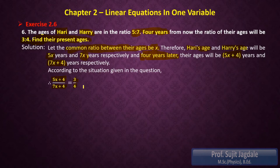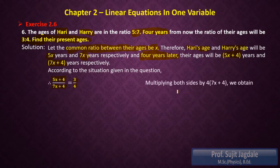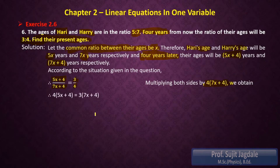Now you can simplify this equation by performing two types of operations: the first is to multiply both sides by the denominator, or the second is to transpose the denominators to the other sides. Both methods are acceptable. Here I am using the method of multiplying both sides by the denominators — that is, 4 into (7x + 4) — combining the LHS and RHS denominators and multiplying both sides by that factor. After multiplying we get: 4 into (5x + 4) equals 3 into (7x + 4).